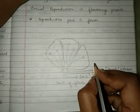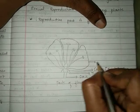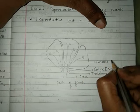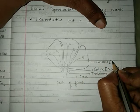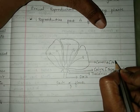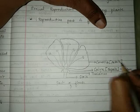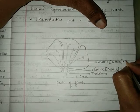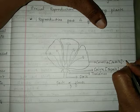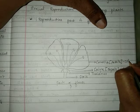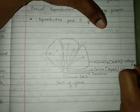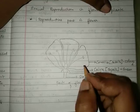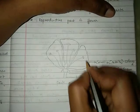The next part is called the corolla. The individual units of the corolla are called petals. All petals join together to form the corolla and it is usually brightly colored in different colors. The next part is called the male reproductive part.